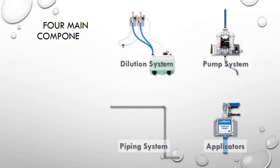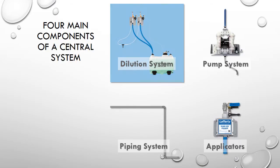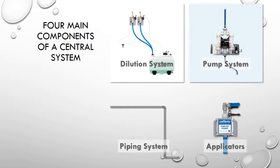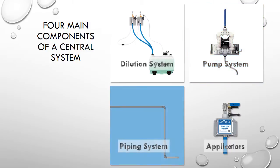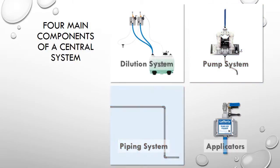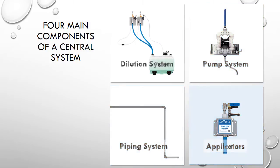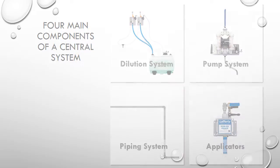The four major components of a central system are the dilution system, the pump system, the piping system, and the chemical application equipment.